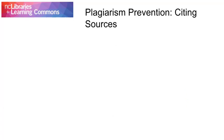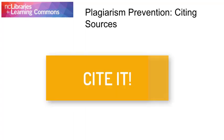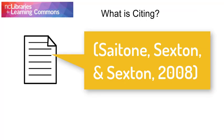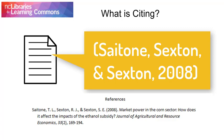Did you notice a theme in the previous examples? Plagiarism only occurs if the original source is not cited. Citing sources involves placing a short reference to the original work in the text of your paper, and a full reference in the list at the end. There are many different citation styles. Niagara College commonly uses APA and IEEE, but check with your instructor to see what you'll be using for your class.